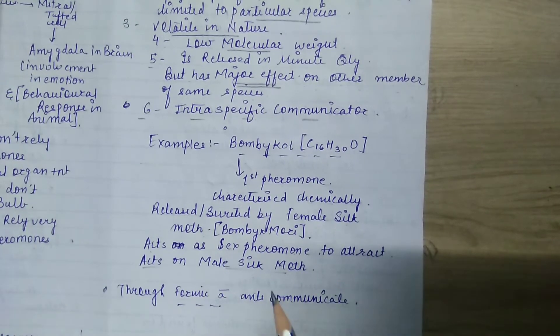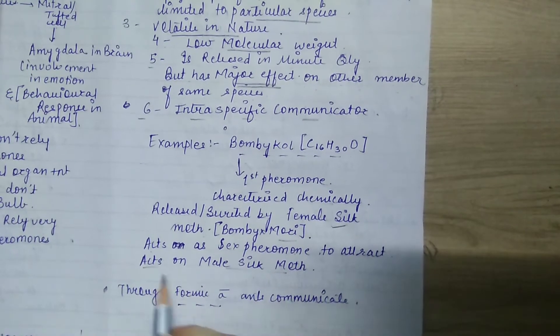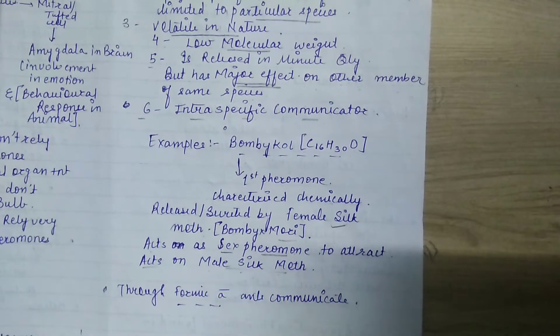So this acts on male silk moth. How is it secreted? Through female silk moth, called Bombyx mori—this is its species. This acts as a male attractant, called a sex pheromone, and its name is bombicol, C16H30O.